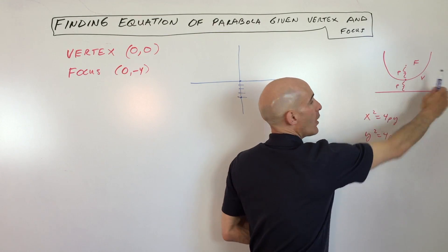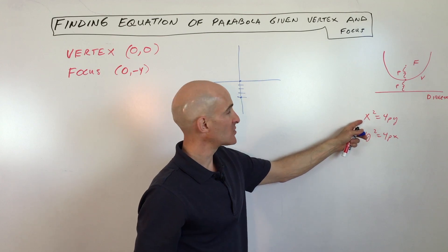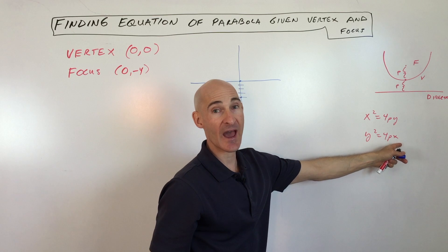Okay and there's two different forms of the equation: there's the x squared equals 4py form and there's the y squared equals 4px form.